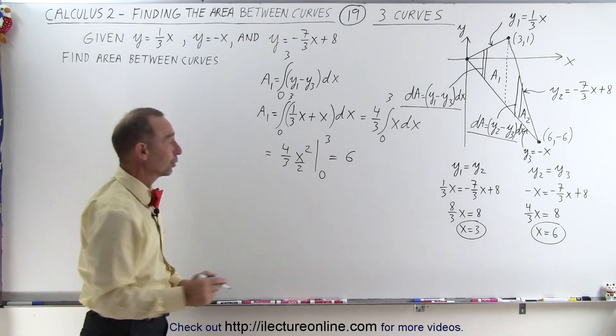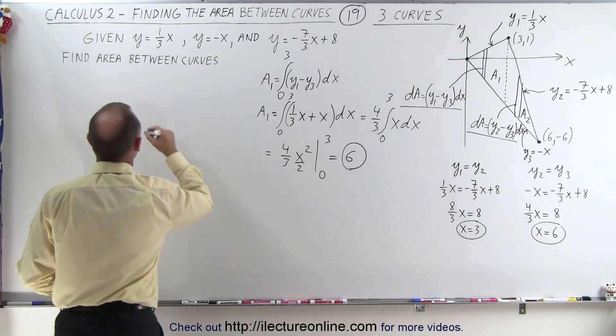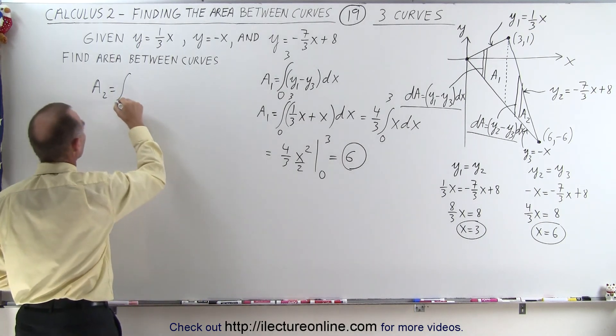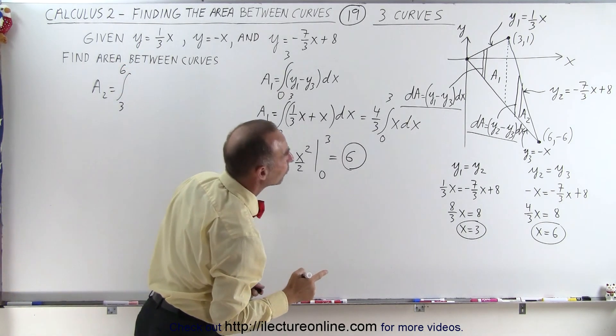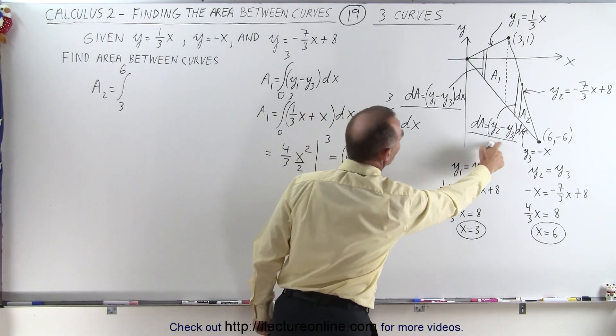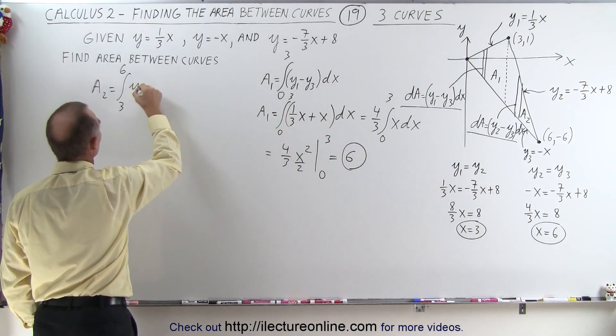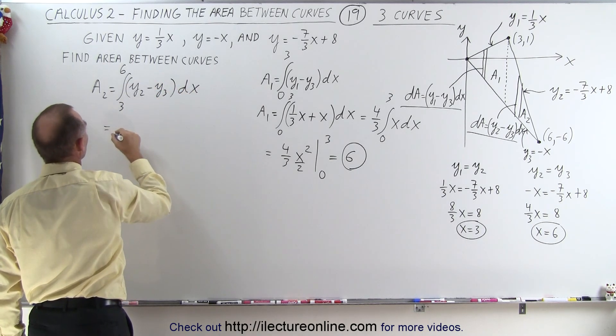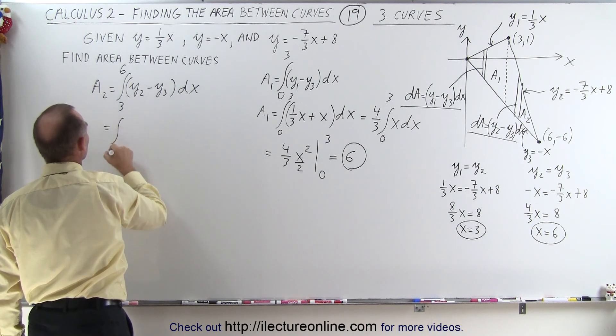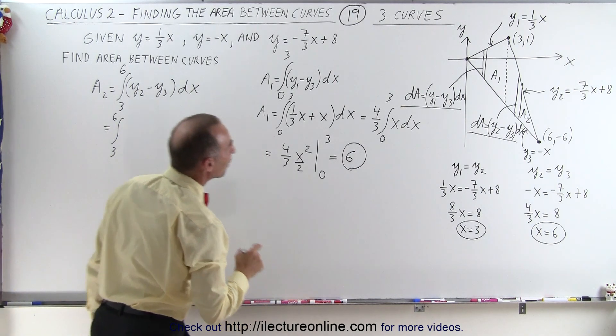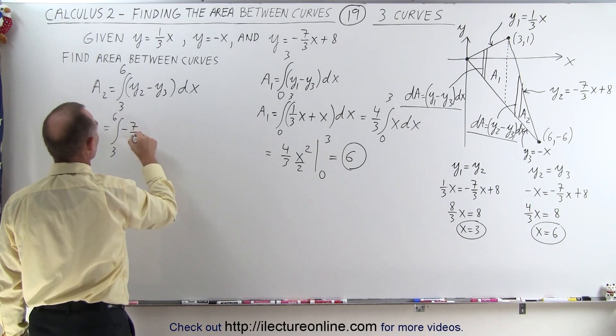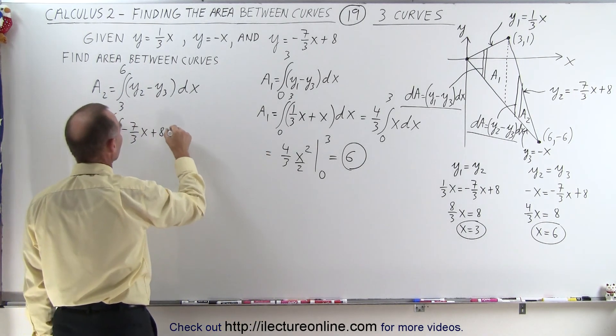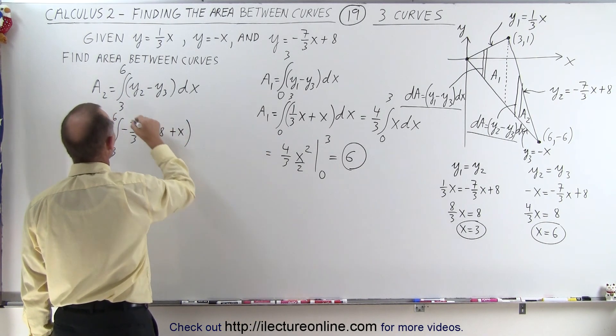Now let's find area 2. Area 2 is going to be equal to the integral from x equals 3 to x equals 6. And the dA in that case is going to be y2 minus y3 times dx. So this is equal to the integral from 3 to 6. Now y2 is -7/3 x plus 8, minus y3. And y3 is a -x, so minus times a minus is a plus x, the whole thing times dx.